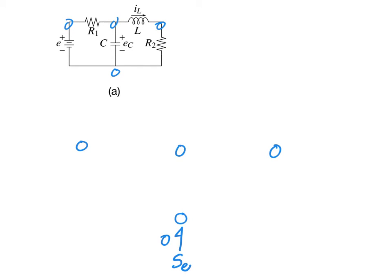Now we want to insert our one-ports and two-ports. There are no one-ports in this system — there are only two-ports. We've got a battery that goes between this voltage and that voltage, a resistor between these two voltages, an inductor between these two voltages, a capacitor between these two voltages, and another resistor between these two voltages.